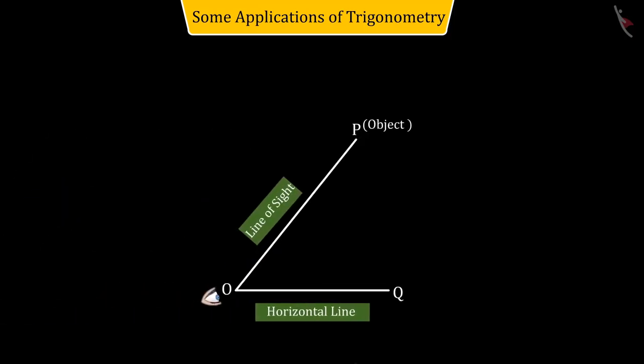If an object P is above the person's eye, i.e. the horizontal line OQ passing through point O, then for the person to see that object, the angle by which he has to raise his vision relative to the horizontal line is called the angle of elevation.